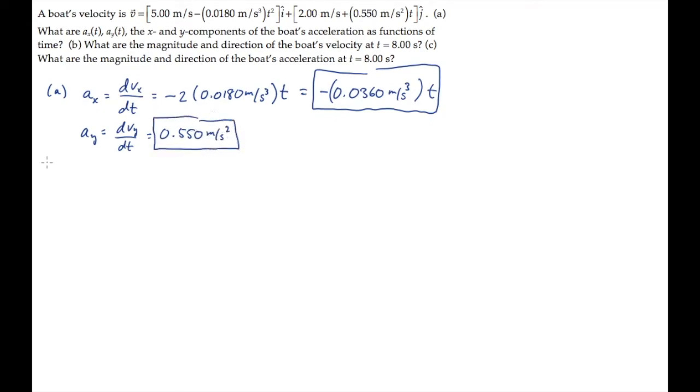Part B asks for the magnitude and direction of the boat's velocity at the time t equals 8 seconds. First we'll find the components of the boat's velocity at that time, and then we'll find the magnitude and direction.